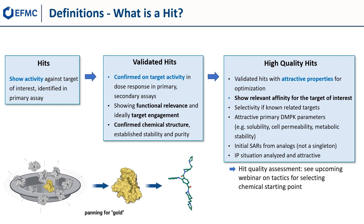A high quality hit is a validated hit with attractive properties for optimisation. It must show relevant affinity for a target of interest, selectivity against any known related targets, and attractive DMPK. The compound should not be a singleton, and the IP situation has been analysed and deemed attractive. For strategies for assessing hit quality, please see our upcoming webinar on tactics for selecting a chemical starting point.